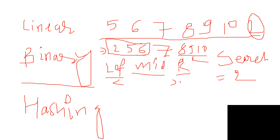We check: is 5 equal to 2? No. Is 2 less than 5? Yes. So we go to the left part and find 2 matches. Every time in binary search, we skip half of the array. Because of that, the time complexity of binary search is O(log n). This is where the advanced data structure — hashing — starts.